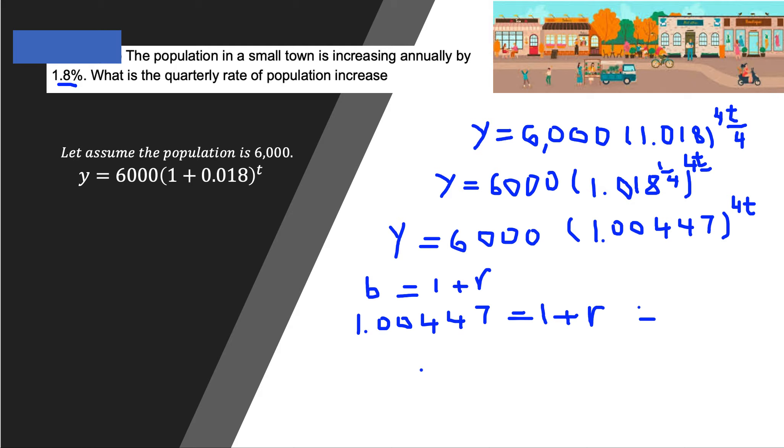Now this implies when we subtract both sides by minus 1, r is going to be equal to 0.00447.